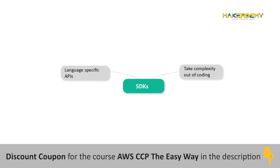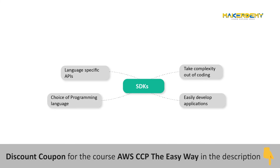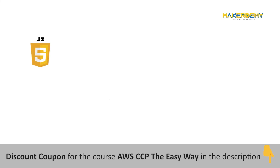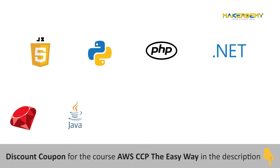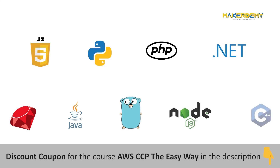Using SDKs, you can easily develop applications on AWS in the programming language of your choice. You can use JavaScript, Python, PHP, .NET, Ruby, Java, Go, Node.js, C++, or AWS SDKs.